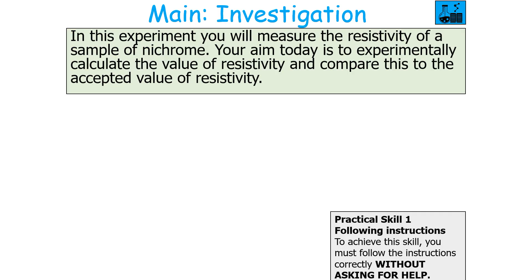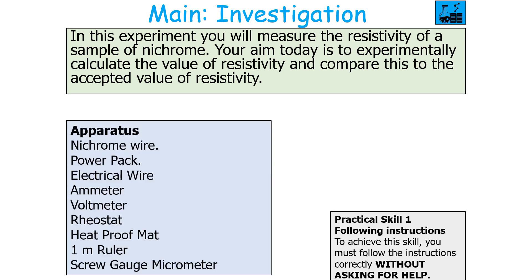In this experiment we're going to measure the resistivity of a sample of nichrome wire, calculate the value of resistivity and compare it to an accepted value. For this experiment you would need nichrome wire, a power pack, electrical wire, an ammeter, voltmeter, a rheostat, a heat proof mat, a one metre ruler and a screw gauge micrometer.